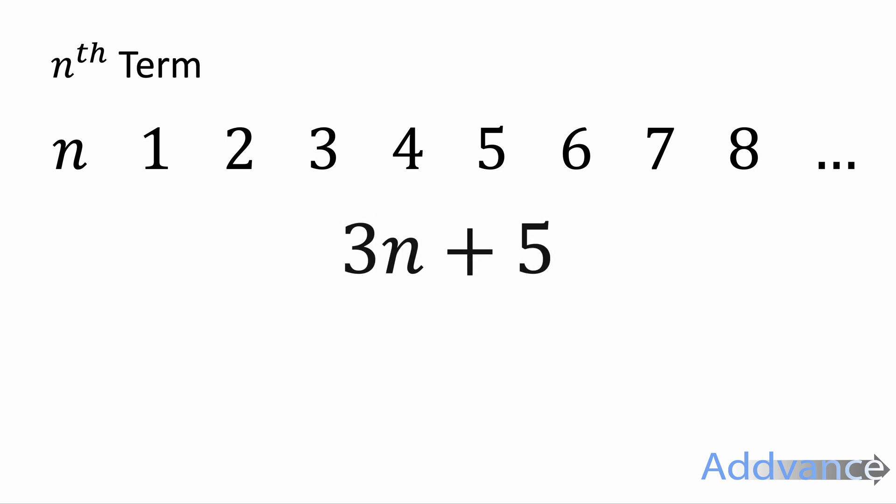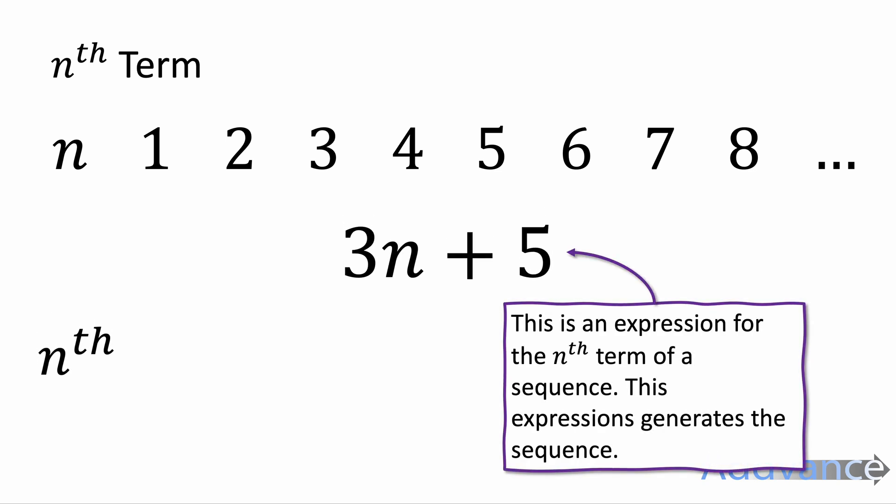When we talk about the nth term, this is a rule for generating the sequence. We've got the n's at the top. N is one, two, three, four, five, six, seven, eight, etc. These are always whole numbers, just counting numbers, and this means the position of a sequence.